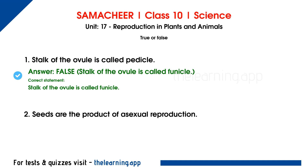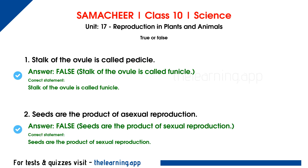Second question: seeds are the product of asexual reproduction. This is false. Seeds are formed through sexual reproduction, not asexual reproduction. So seeds are the products of sexual reproduction.